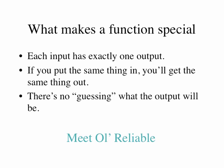So what makes a function special? Each input has exactly one output — it doesn't have zero outputs and it doesn't have more than one output. If you put the same number into a function, you'll always get the same thing out. There's never any randomness or guessing as to what the output is going to be. Next time you're in class, ask Mrs. Dever to show you 'O Reliable,' her function machine.